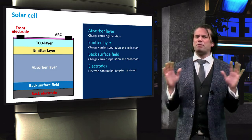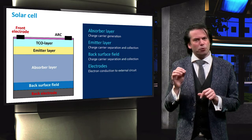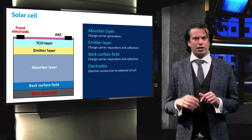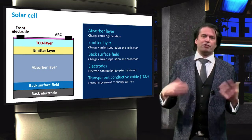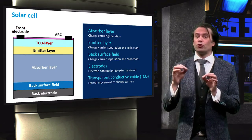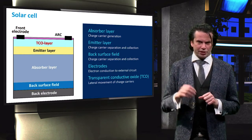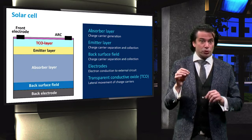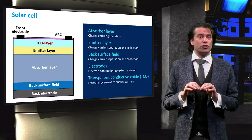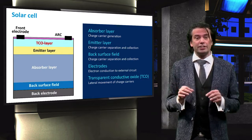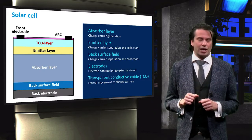For many PV technologies, however, the conductive properties of the emitter layer are too poor for good lateral transport. For these technologies, a transparent conductive oxide layer is introduced that is transparent to the incident light, and has excellent conductive properties to facilitate the lateral movement of charge carriers to the front electrode.